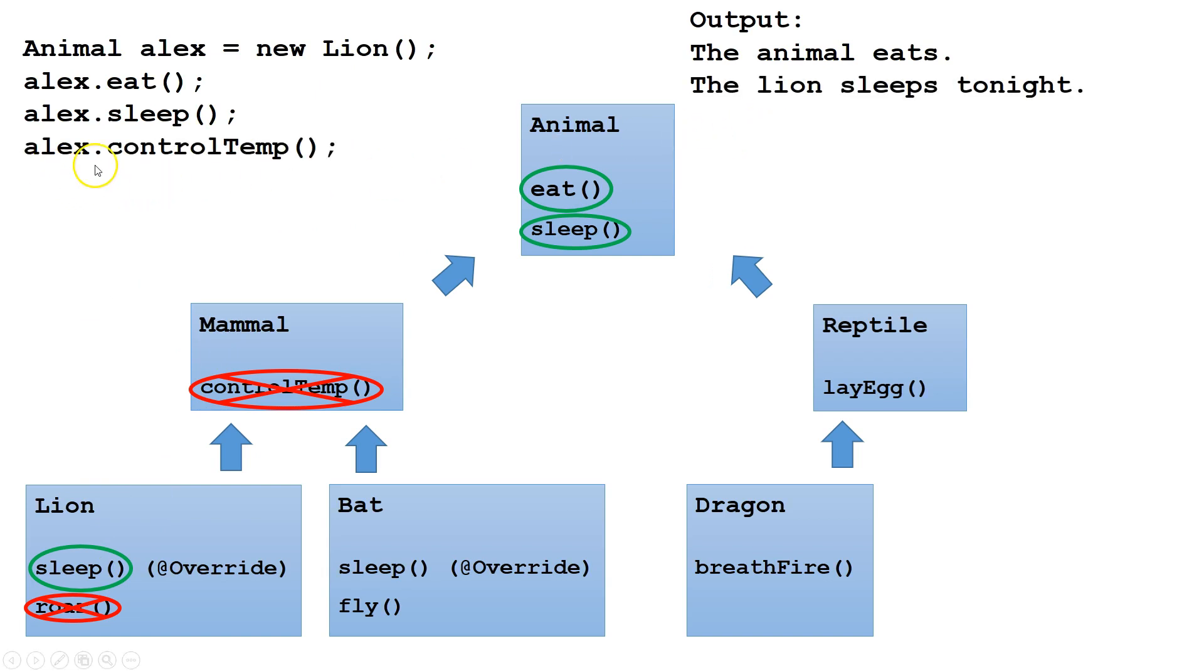Suppose we tried to call controlTemp from the variable alex. This is illegal because controlTemp never existed in the original Animal class. However, if we made alex a variable type Mammal or a variable type Lion, alex.controlTemp would work.